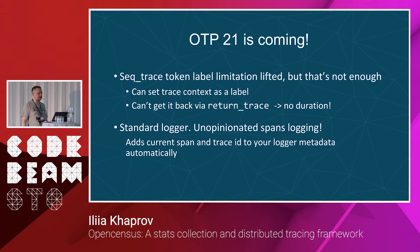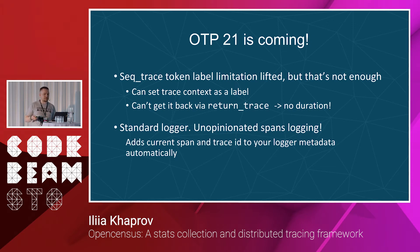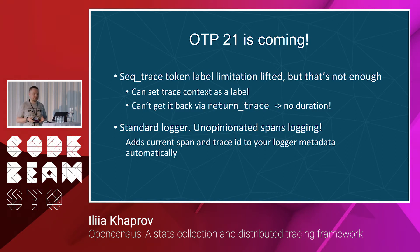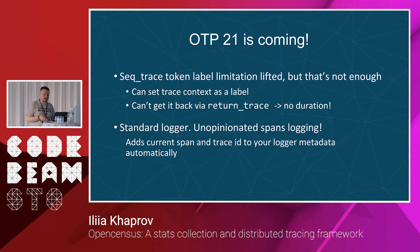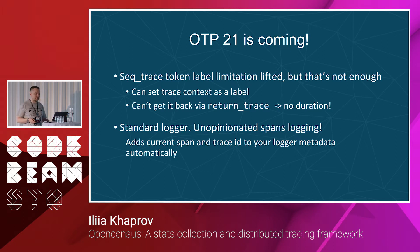OTP21 is coming. We have the seq_trace module, which helps to trace messages. In OTP21, we have lifted the token label limitation — we can now set the whole trace context as a label. But that's not enough because we don't get the trace context back on return trace, so we can't compute duration. You can find more on this topic on our OpenCensus Erlang repository — we have an issue for that with a pretty cool discussion.